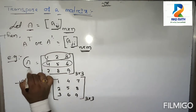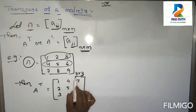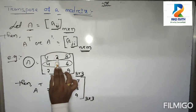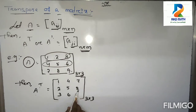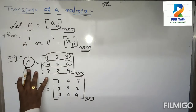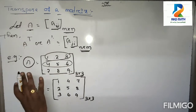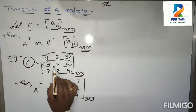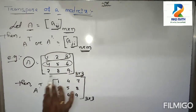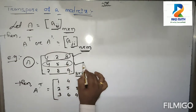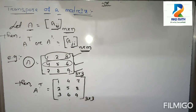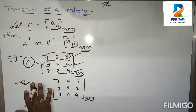The third column is 7, 8, 9. So A is the 3 by 3 matrix with entries 1, 2, 3, 4, 5, 6, 7, 8, 9. And A transpose is 1, 4, 7 in the first column; 2, 5, 8 in the second column; 3, 6, 9 in the third column. Simply put: transpose means transferring rows to columns and columns to rows.